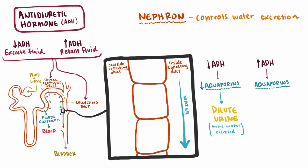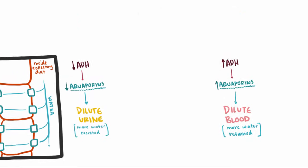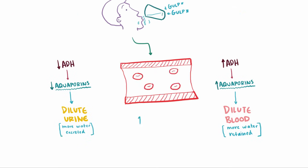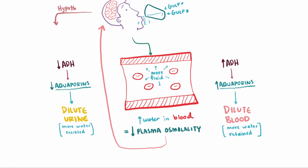When ADH is high, on the other hand, aquaporins grab much of the water passing through these tubes and throw it back into the blood. When I drink a glass of water and that water is absorbed into my blood, my plasma osmolality drops, which means I'm diluting my blood. The hypothalamus sees this drop in plasma osmolality and tells the pituitary gland to slow down the release of ADH. Low ADH leads to lots of diluted urine, which brings our plasma osmolality back to normal. That is a nifty feedback loop.